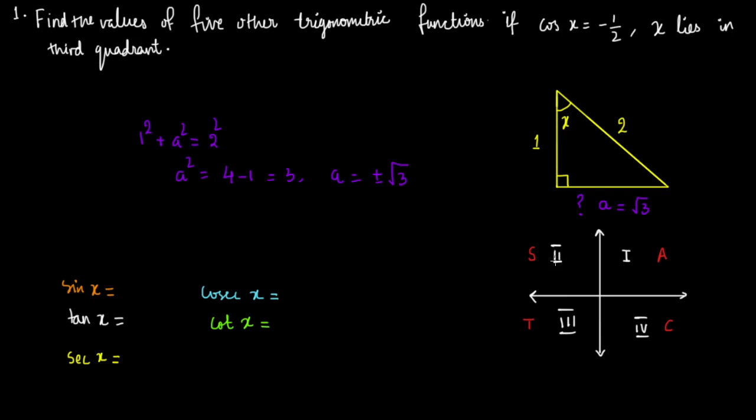Similarly, tan is positive if the angle is in the third quadrant, and cos is positive if the angle is in the fourth quadrant. So it says clearly here that x lies in the third quadrant, which means x is in this third quadrant.